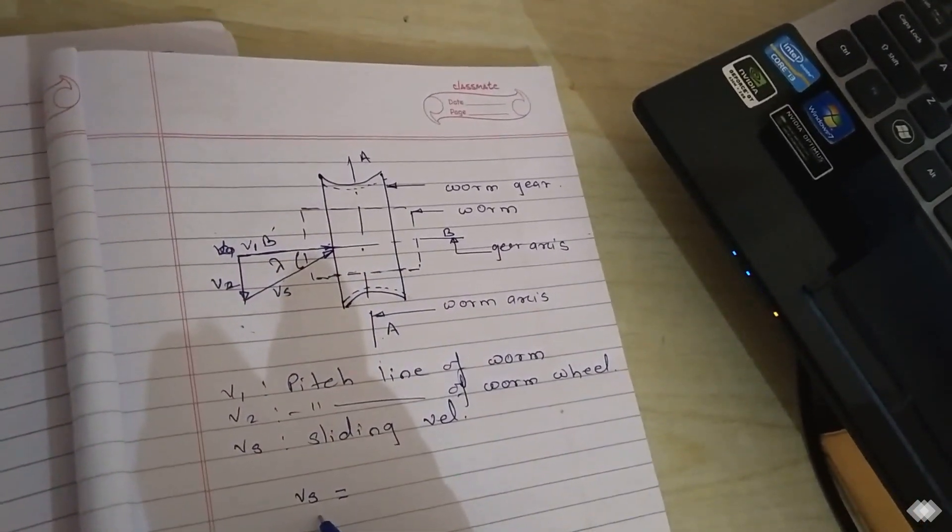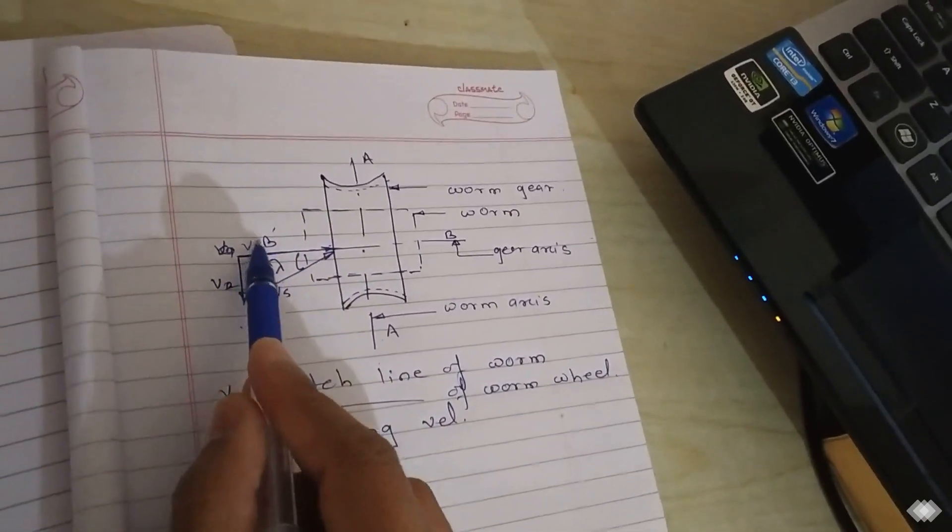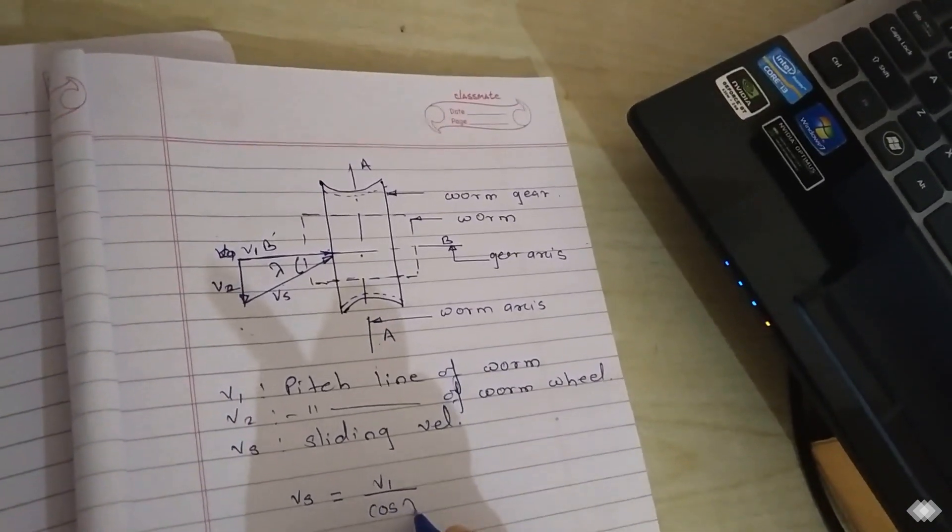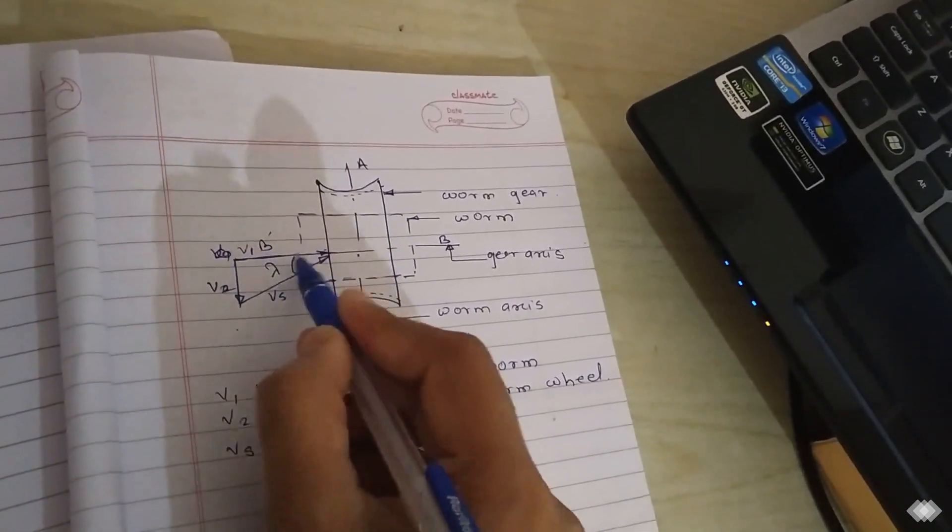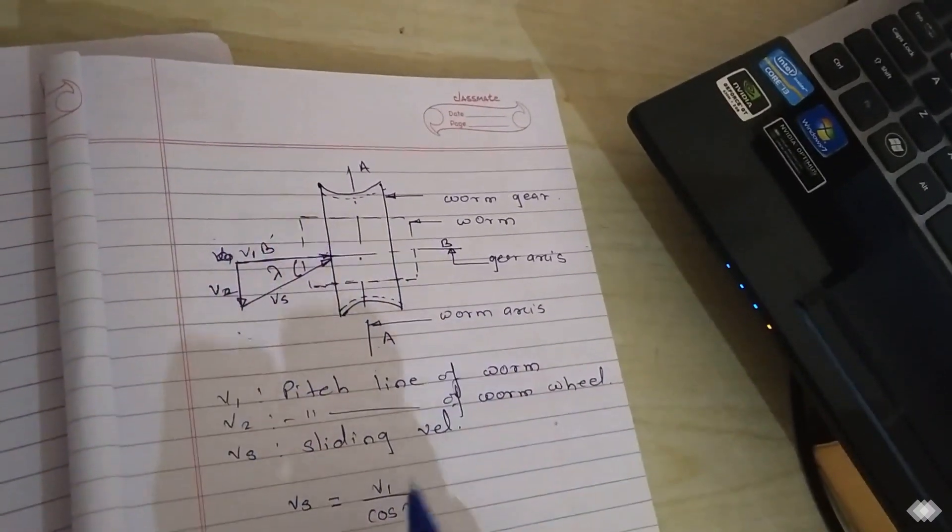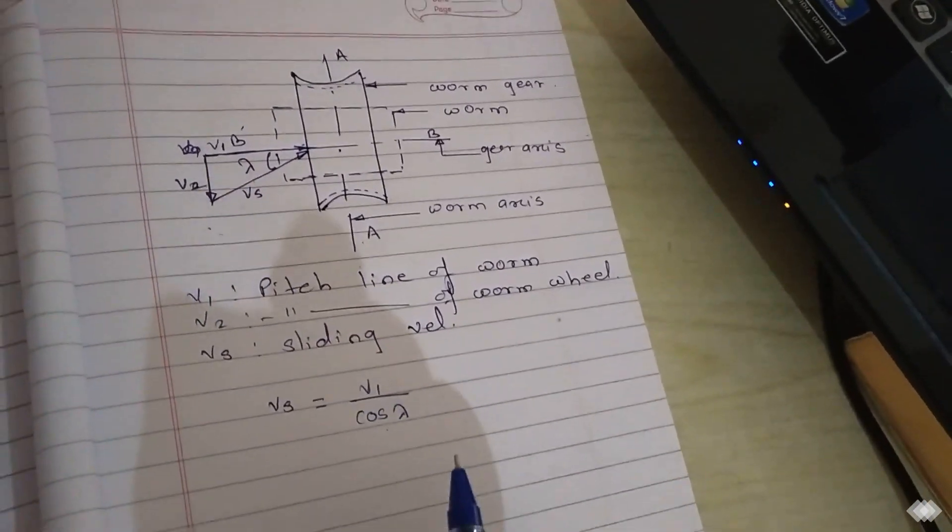The sliding velocity VS is equal to V1 upon cos lambda, because V is the adjacent side of this triangle. So VS equals V upon cos lambda, where V is the pitch line velocity of driver.